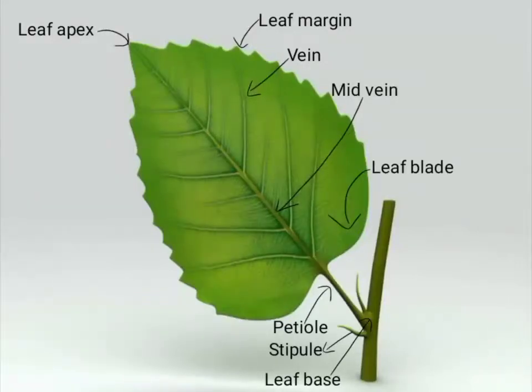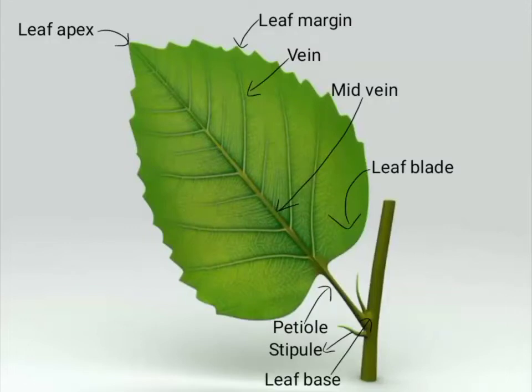The tip of a leaf is a leaf apex. The edge of a leaf is a leaf margin. Veins are the vascular tissue of a leaf. The pattern of veins is called venation.